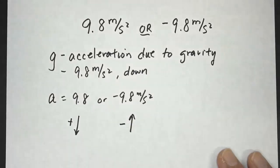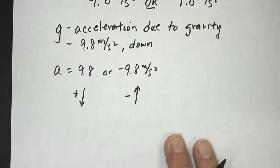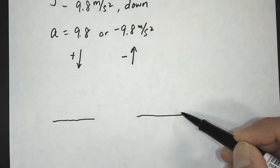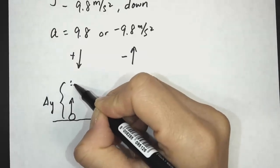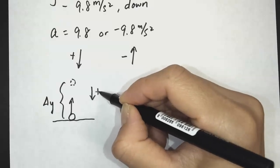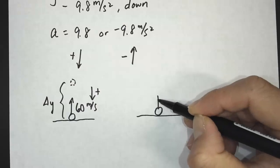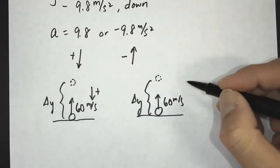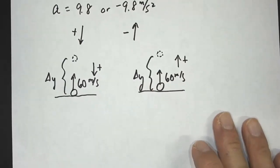Let's take a look at an example. Whether you use positive 9.8 or negative 9.8 depends on the direction you define as positive, and as long as you're consistent you will get the correct answer. Let's say we shoot a ball up into the air and I'm going to solve this problem twice. I'm going to shoot it up with a velocity of 60 meters per second. On the first case, I'm making down positive. On the second case, I'm making up positive. So I'll solve it using both directions.